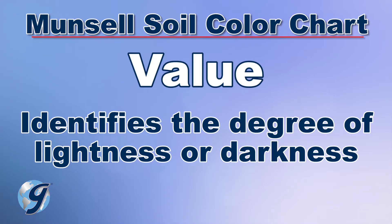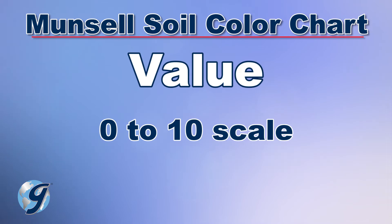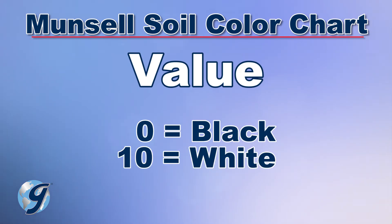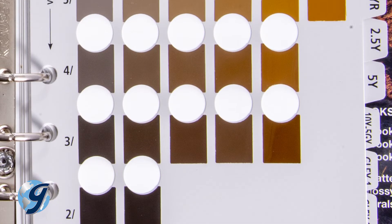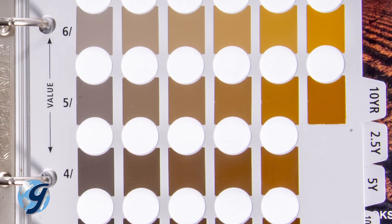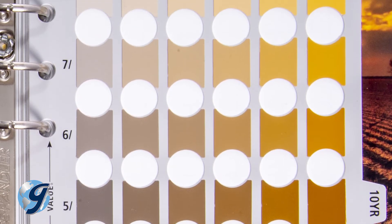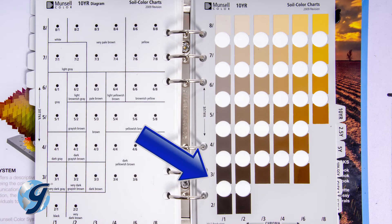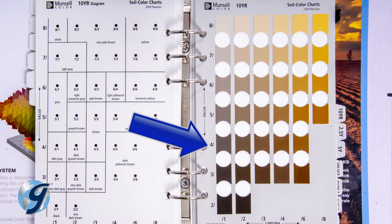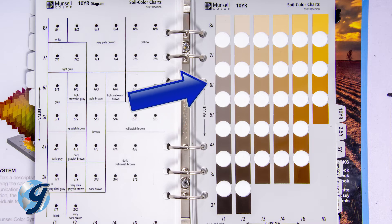Value indicates the degree of lightness or darkness of your soil sample on a scale of 0 to 10. 0 equals black and 10 equals white. As you can see, lightness increases from black at the bottom of the page through the grays to nearly white at the top of the page. Value, or lightness or darkness, reads on the left of the chart, vertically.